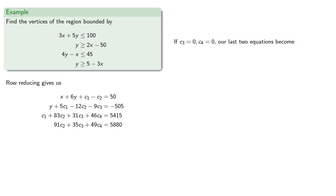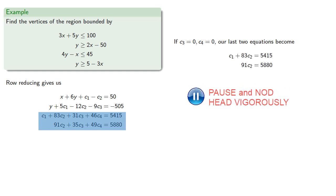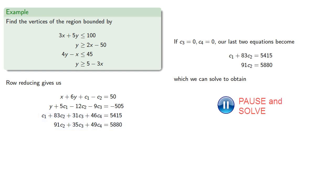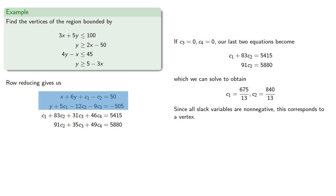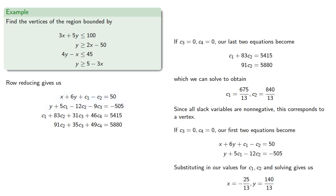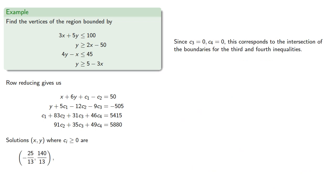If c3 and c4 are 0, the last two equations become... And substituting in our values for c1 and c2 and solving gives us... And since c3 and c4 are 0, this point corresponds to the intersection of the boundaries for the third and fourth inequalities.